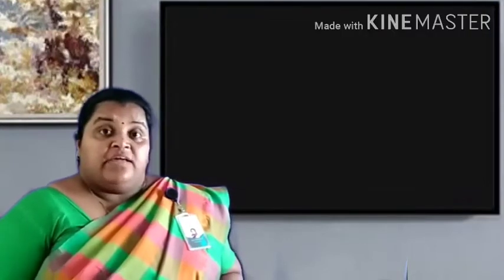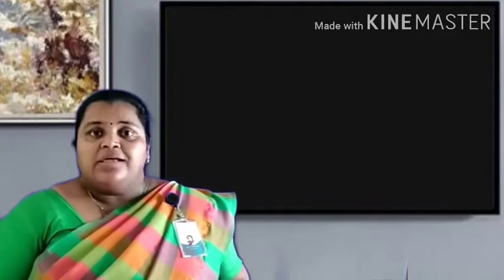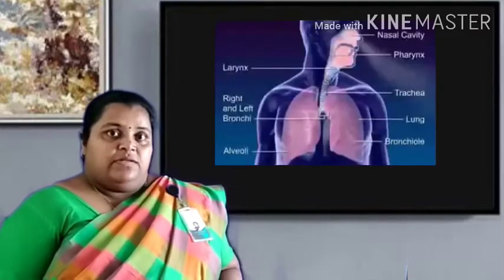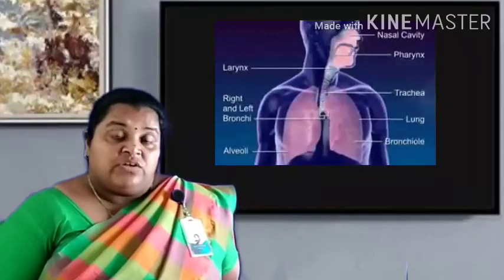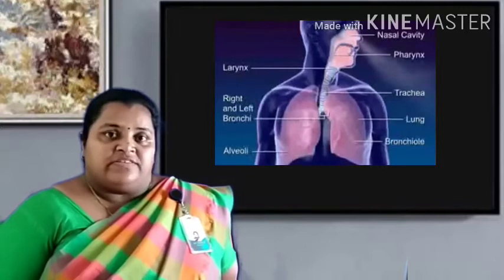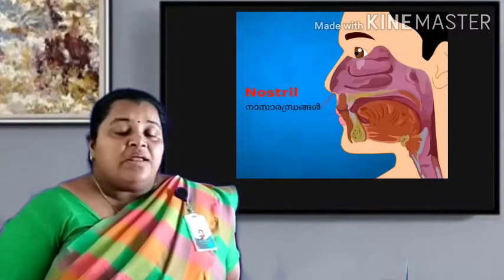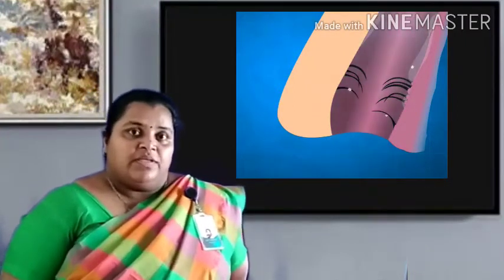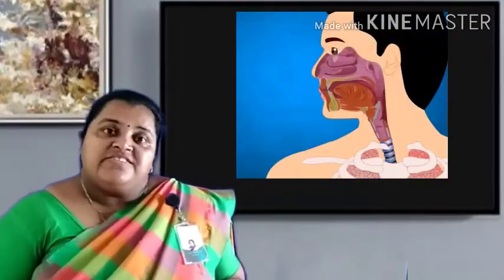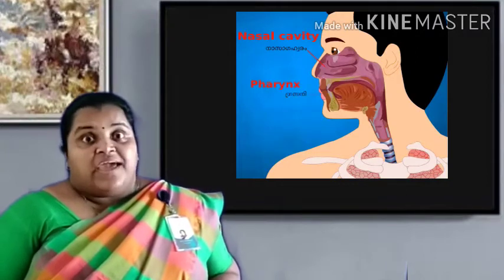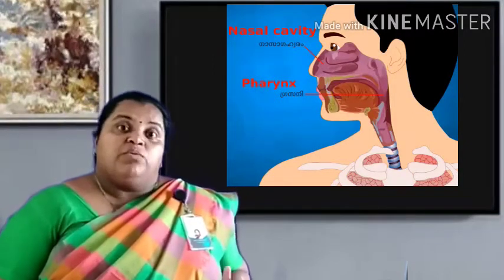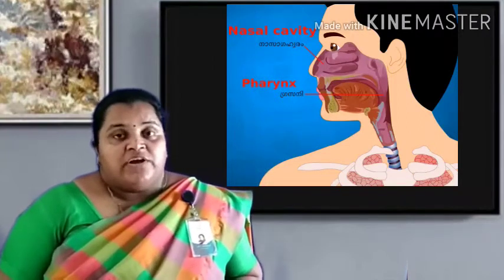The respiratory tract extends from the nostrils to the internal alveoli. Now we will learn in detail about the respiratory tract. Nostrils are the passage through which air enters in and out of the lungs. Hair and mucous membrane present in the nostrils prevent the entry of dust particles and germs. Nostrils lead to the nasal cavity, which is a tube connecting the nostrils and the pharynx. It also contains a mucus membrane that prevents the entry of dust particles and germs.